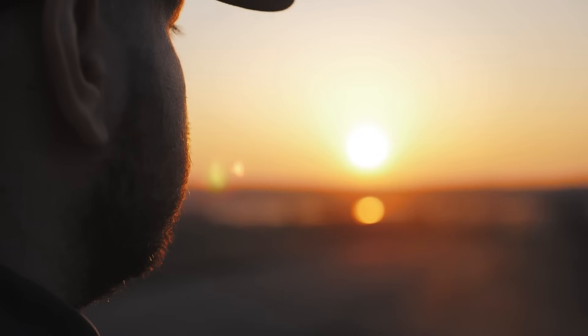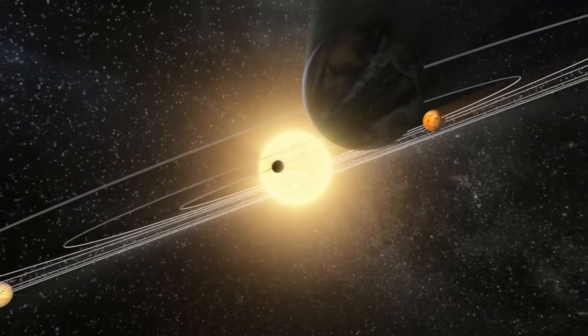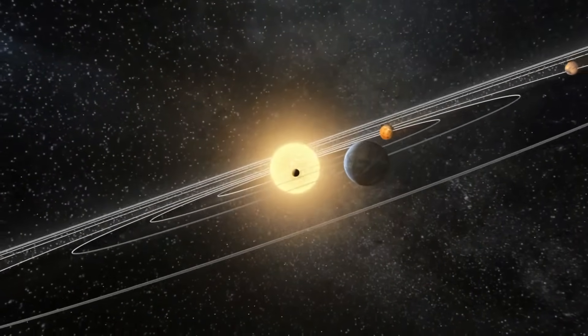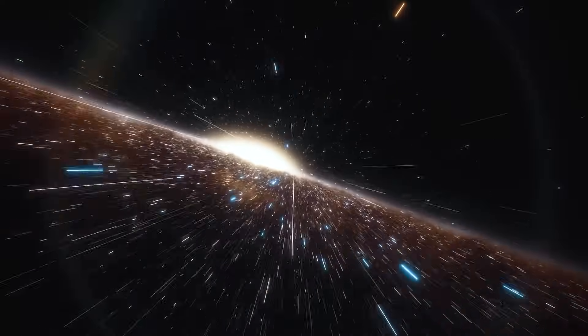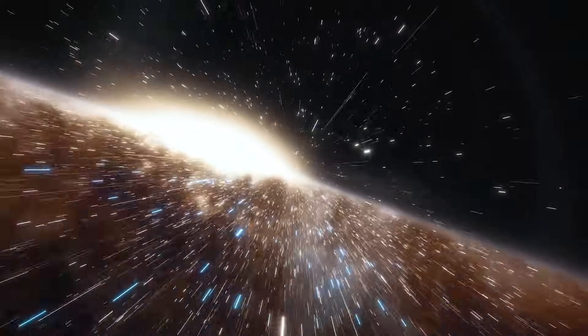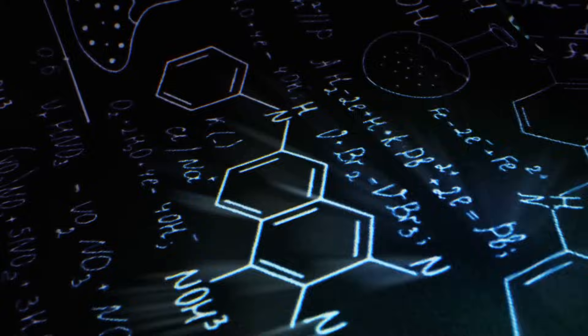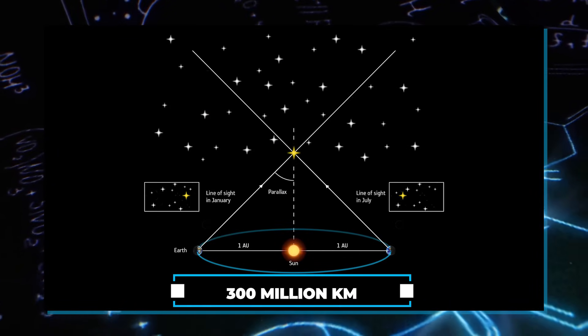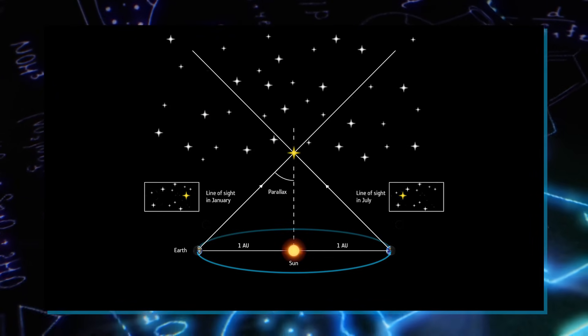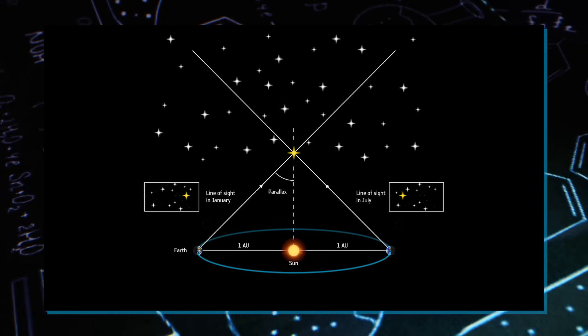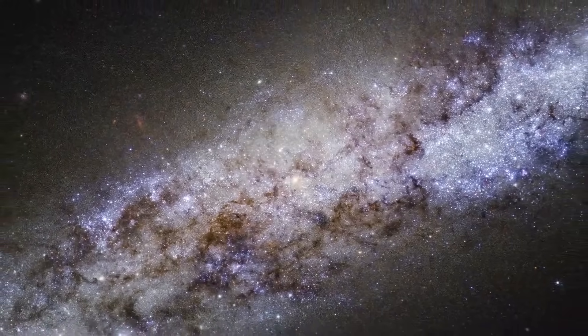Objects closer to your face exhibit more noticeable shifts. Using the same principle, we can measure distances between Earth and objects in the Milky Way by observing the apparent displacement from opposite sides of Earth's orbit around the Sun, a span of around 300 million kilometers. This shift enables us to calculate the distance.